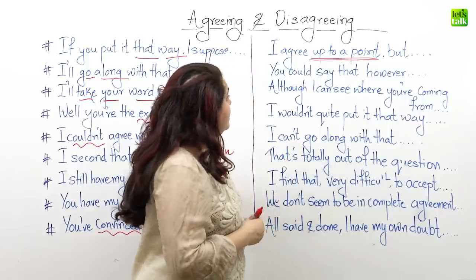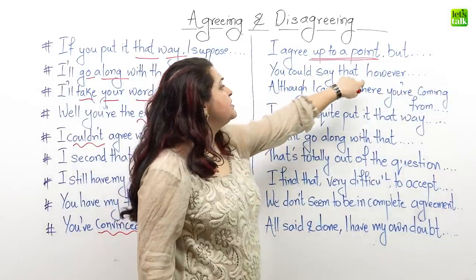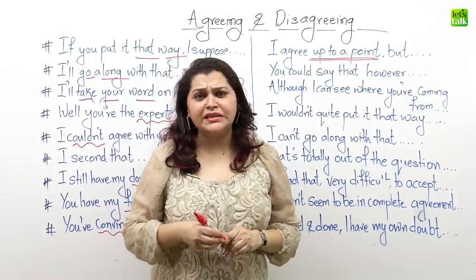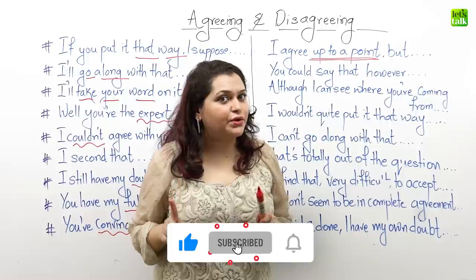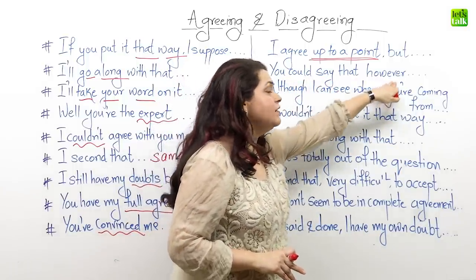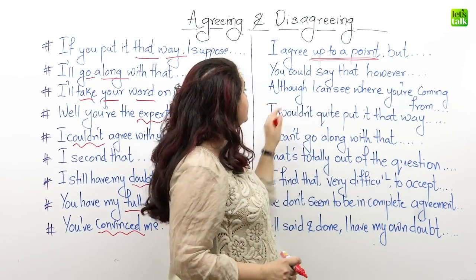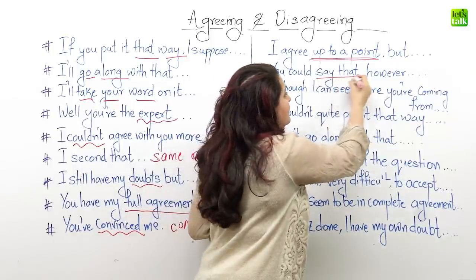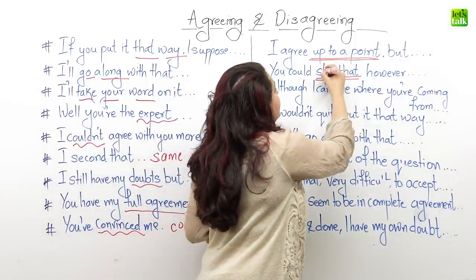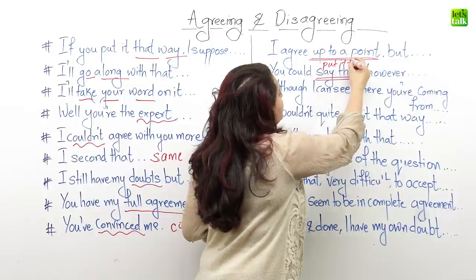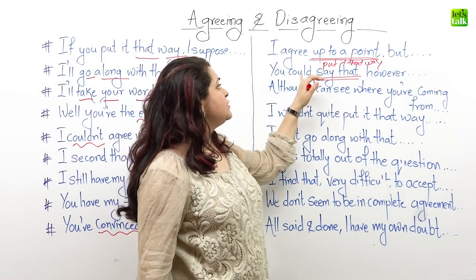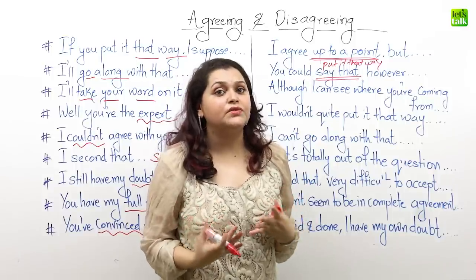Moving on, let's say that Dan has a particular reasoning for why he is saying certain things and Sally feels that his reasoning is valid but she still does not agree with him. Then she could say 'well you could say that, however I do not agree with you.' Or she could say 'you could put it that way, however I do not agree with you.' So when Sally says this, it's quite obvious that her views are different from Dan's views.